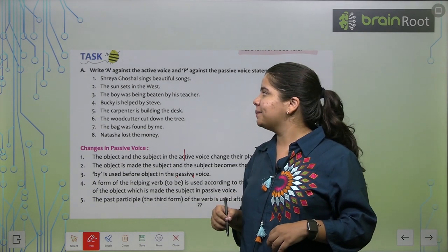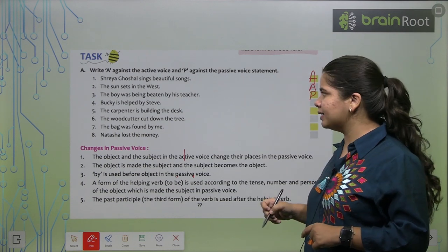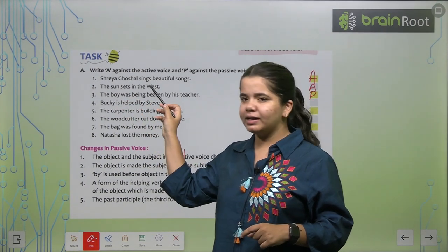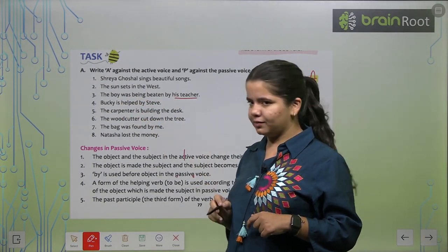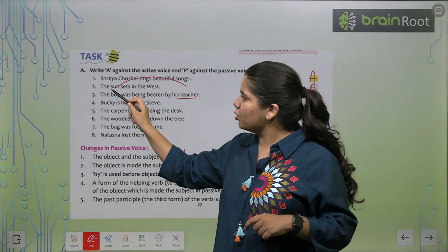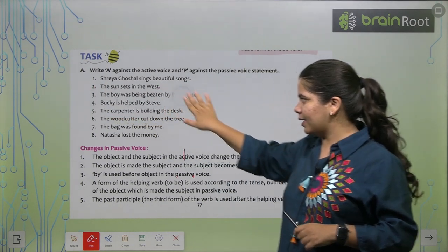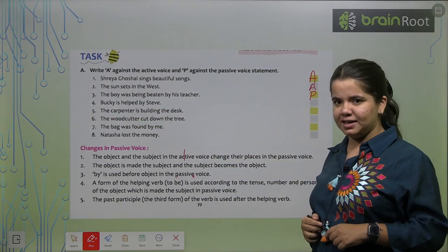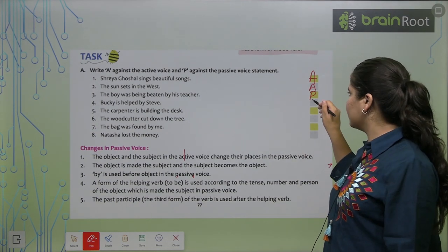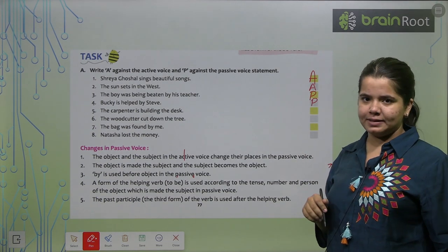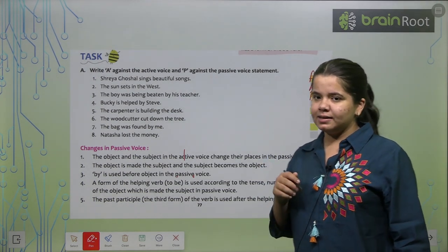The boy was being beaten by the teacher. So this is passive voice. See, you must be seeing the difference in sentences. How directly they have written. And this sentence, to tell about the subject, we first took help of some other thing, then came to the subject. So that is our passive voice. Now, Bucky is helped by Steve. This is also passive voice.